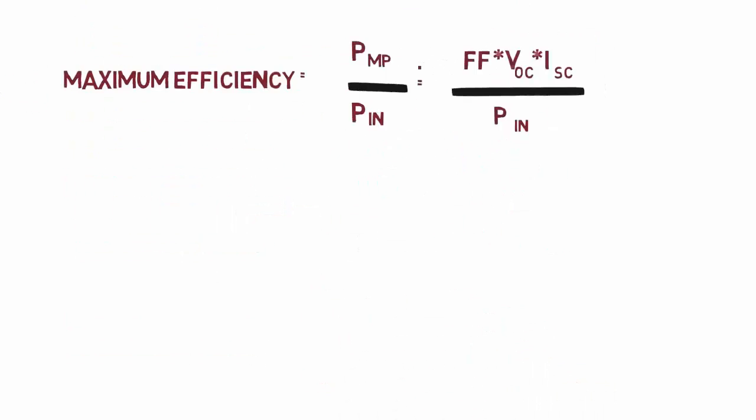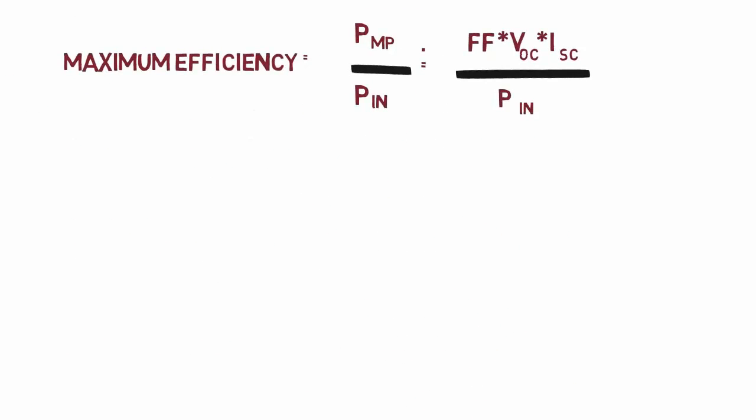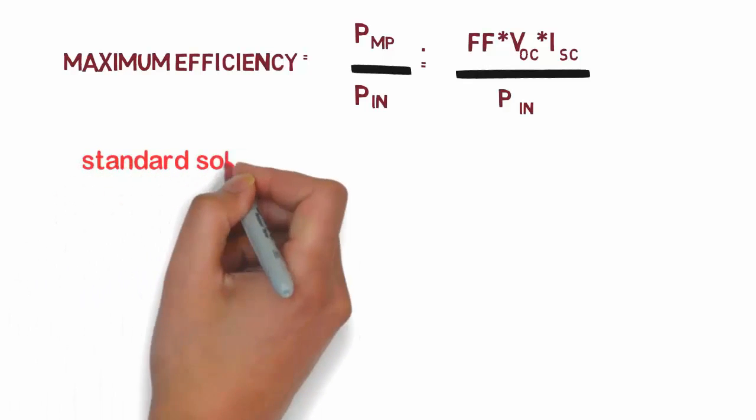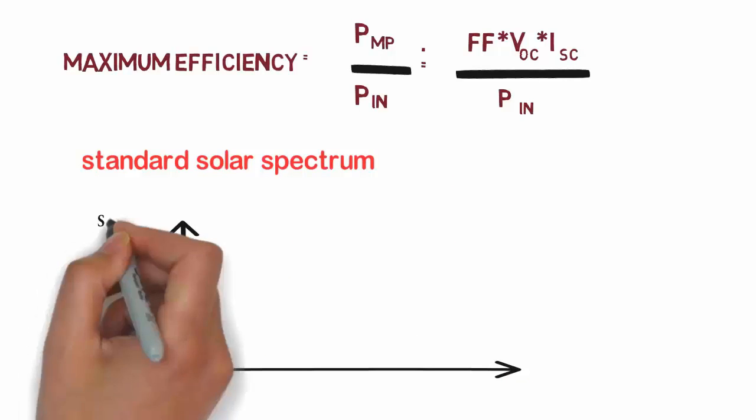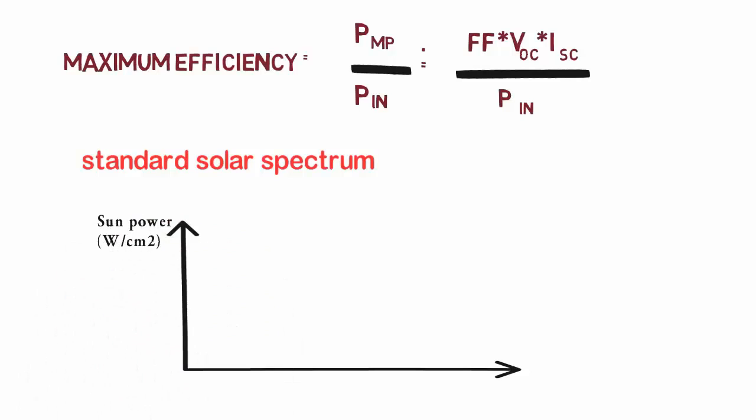Now we will see what would be the value of PIN. We can get the value of PIN from a standard solar spectrum. A standard solar spectrum is nothing but a graph between sun power and wavelength. If we take sun power in watt per centimeter square on y-axis and wavelength in nanometer on x-axis, then the graph will look something like this.